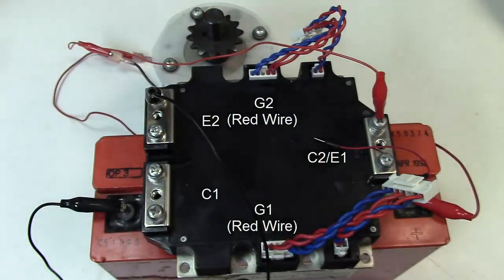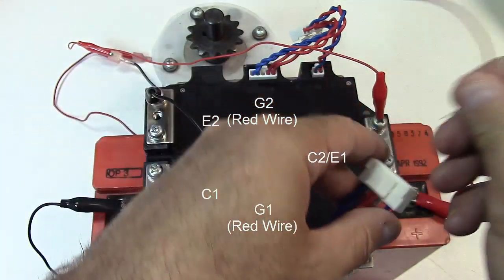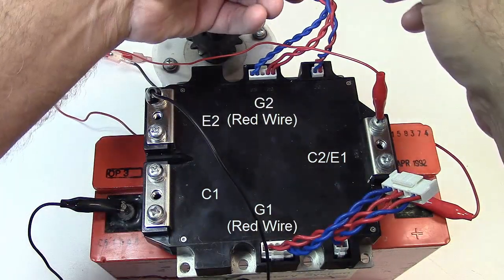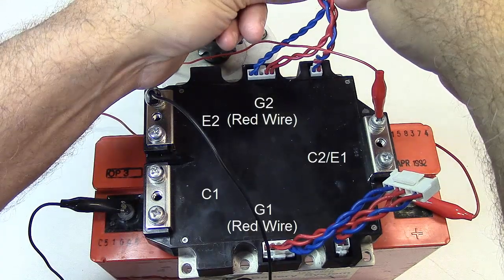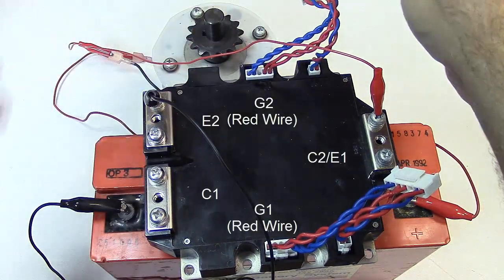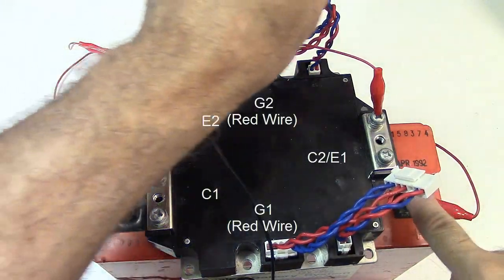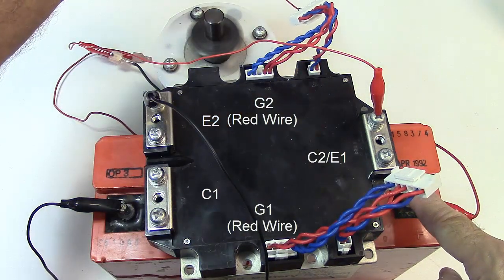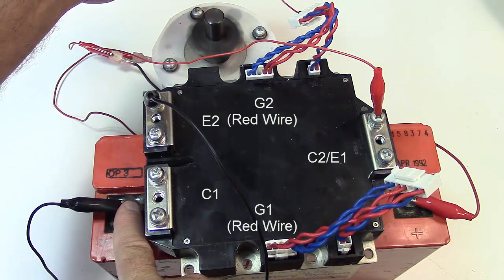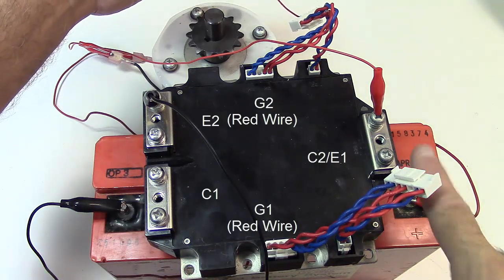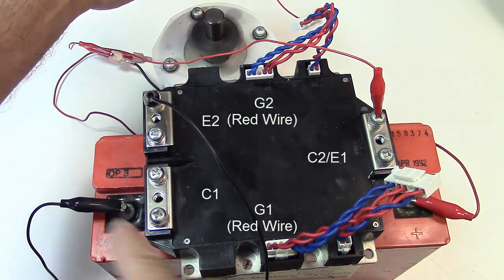Now I've got to put a signal onto G2, which is the red connection right over here. So if I touch this and touch the positive terminal of the battery, I get my motor turning again. And if I touch the negative terminal, I can shut it off. So on, off.